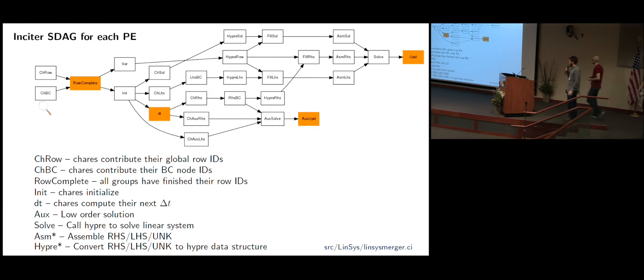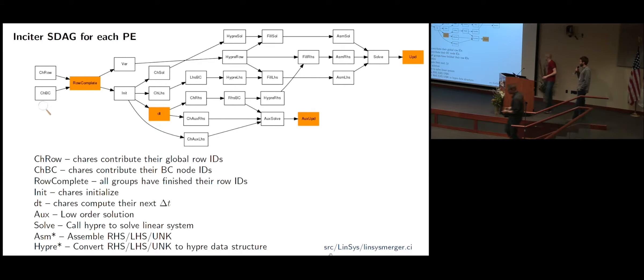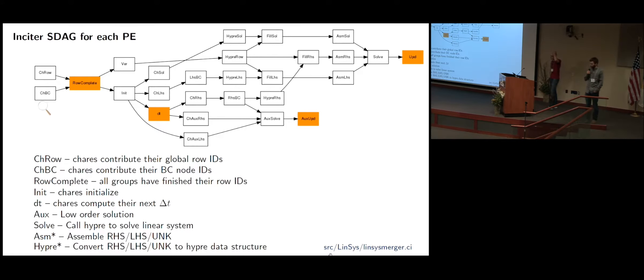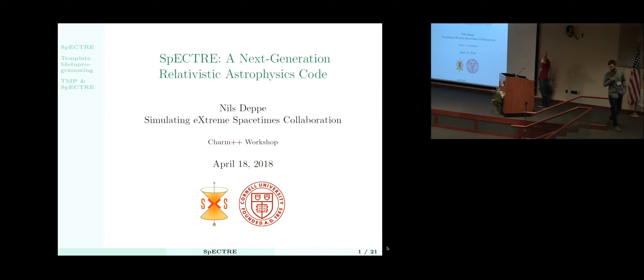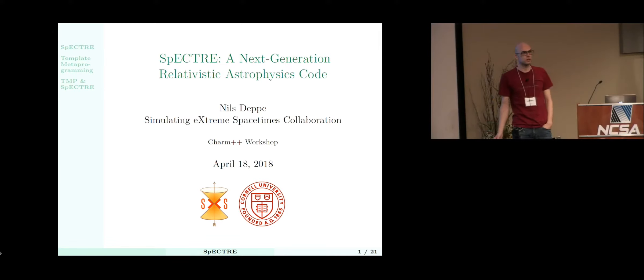Our next talk will be from Neil Stepp, who is a PhD student at Cornell University, and he'll be telling us about SPECTRE, a new astrophysics code being developed at Cornell. I'm here representing the Simulating Extreme Spacetimes collaboration, an international collaboration between Cornell, Caltech, University of Toronto, and the Albert Einstein Institute in Potsdam, Germany.